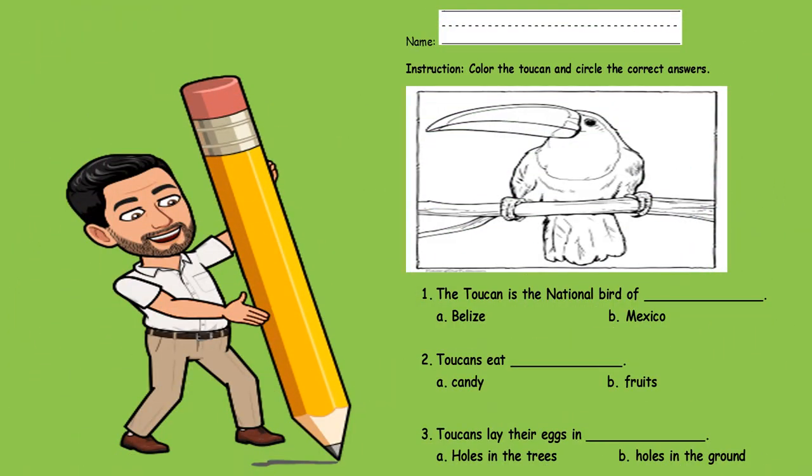So now I want you to get this worksheet that you should have at home. Take out this worksheet and we're going to do it together. The first thing I want you to write is your name, and remember to use your lines properly. So write your name. Are you finished?